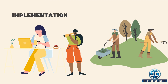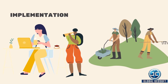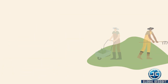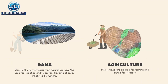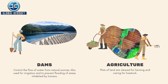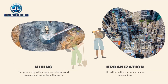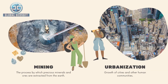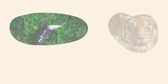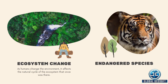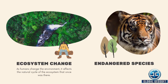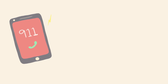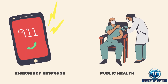GoPPGIS has many implementations in various fields, some of which are dam construction, agriculture, mining, urbanization, monitoring ecosystem change, calculation of endangered species, emergency response, public health, and many more.